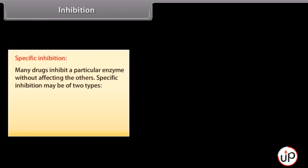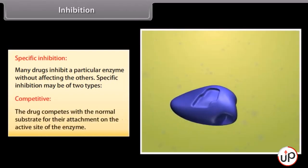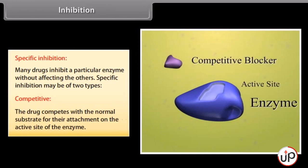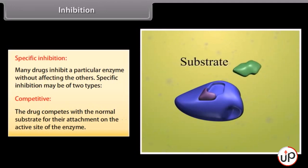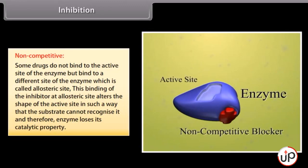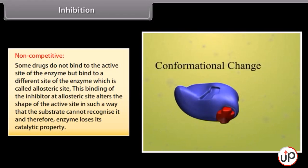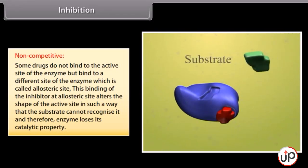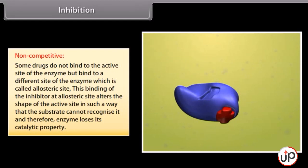Specific inhibition: many drugs inhibit a particular enzyme without affecting others. Specific inhibition may be of two types. Competitive: the drug competes with the normal substrate for attachment on the active site of the enzyme. Non-competitive: some drugs do not bind to the active site of the enzyme, but bind to a different site called the allosteric site. This binding at the allosteric site alters the shape of the active site in such a way that the substrate cannot recognize it, and therefore the enzyme loses its catalytic property.